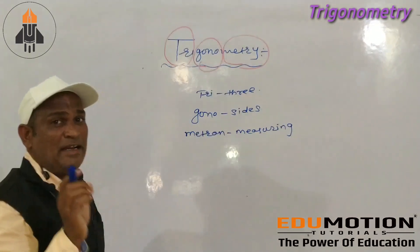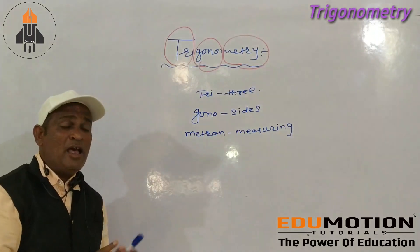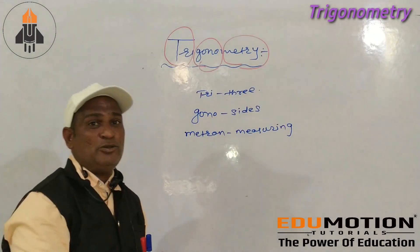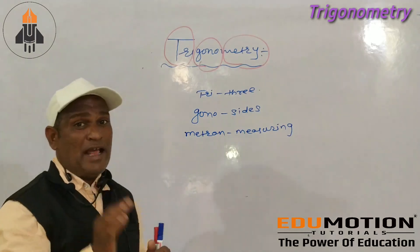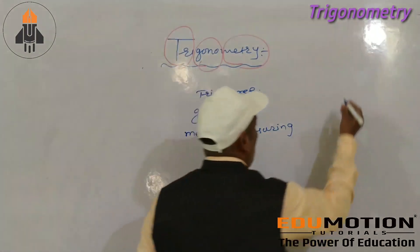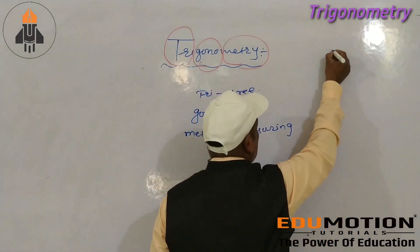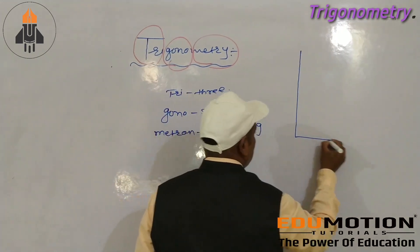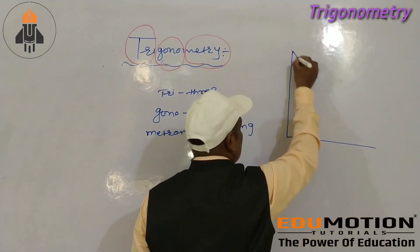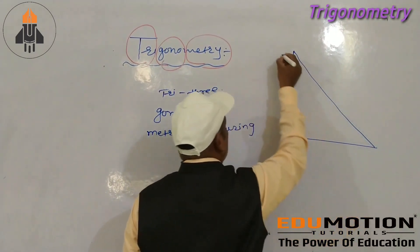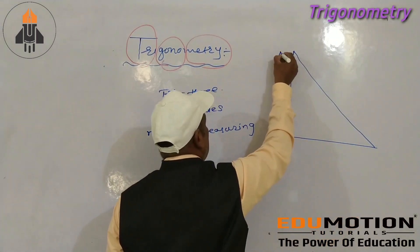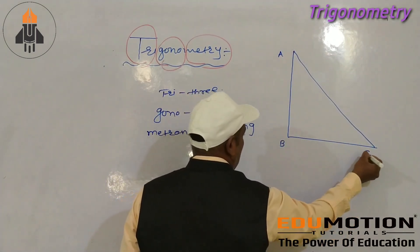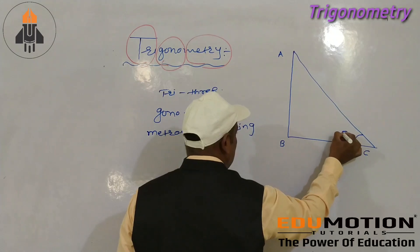It is a three-side measurement. Now you draw a right-angle triangle with vertices A, B, C, and this is your angle theta.